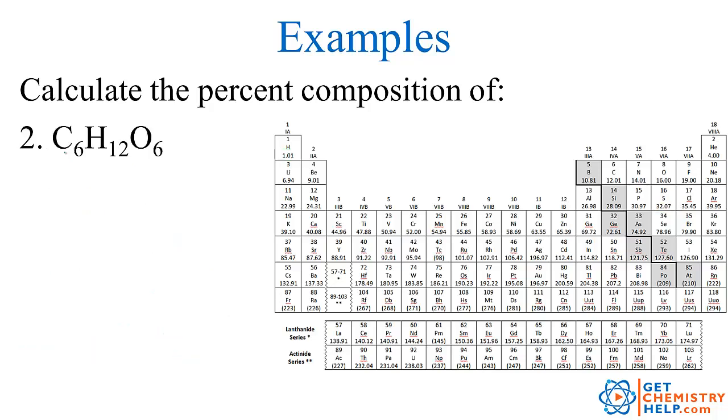So how about number 2 here? C₆H₁₂O₆, this is a compound you might have heard of called glucose. This is a sugar that's used in our body as an energy source. So the percent composition means I want to find the percent carbon, the percent hydrogen, and the percent oxygen. What's the total mass of the carbon? I have 6 carbons, and they have a mass of 12.01 each, so 6 times 12.01, that's a total of 72.06.